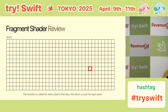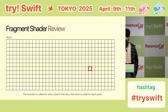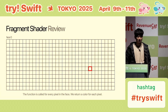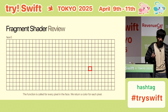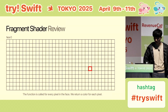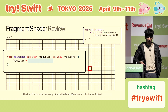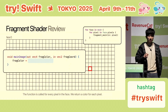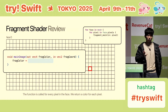Quick review: the fragment shader function is called for every single pixel in the face. In a simplified version, maybe there are 500 pixels, and for every single pixel the function is called and it returns a color. That's the main loop logic — you can set the fragment color to whatever you want: red, green, or whatever.